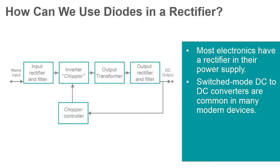And if the frequency is high enough, it will operate silently to most human ears. A transformer is then used to change the voltage of this high-frequency AC signal, and finally another rectifier is used to convert this new voltage back to DC. This very common type of power supply is known as a switching supply and is found in most modern electronic components.